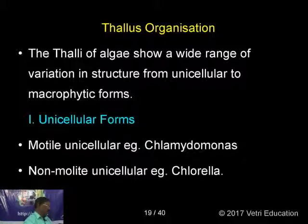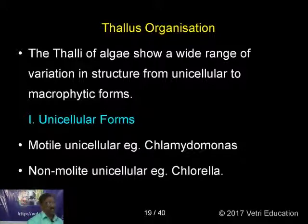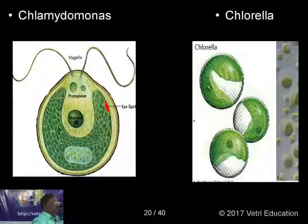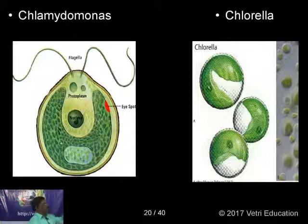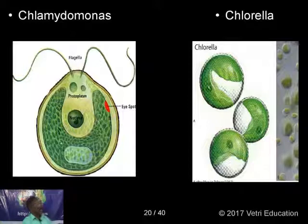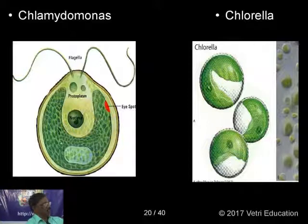Chlamydomonas is a single cell with a cup-shaped chloroplast, two flagella, and an eyespot — it moves from one place to another with a cell wall and pyrenoid for stored food material. Chlorella has a girdle-shaped parietal chloroplast and a nucleus but no flagella, so it cannot move — it is a non-motile unicellular organism.